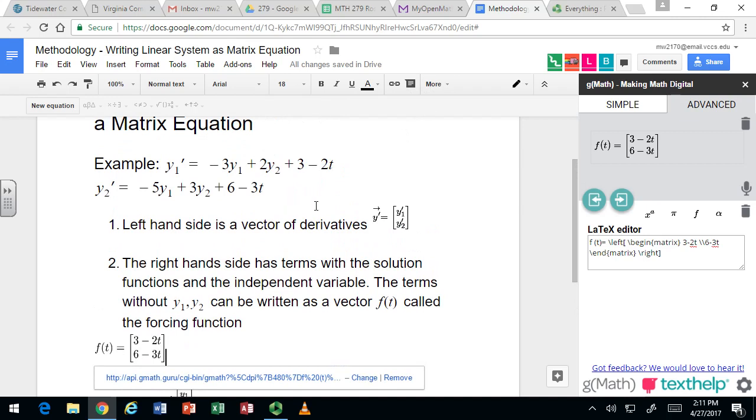If we just took out those parts of the equations, we have the first component of f is 3 minus 2t, and the second component is 6 minus 3t.